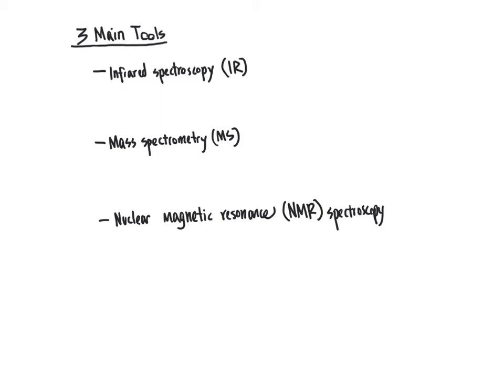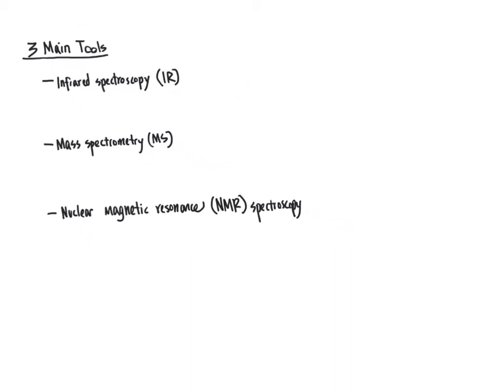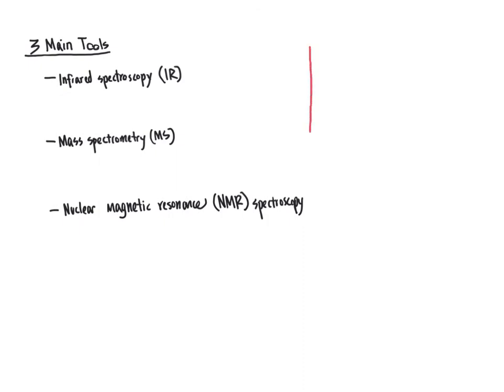In this video we will walk through each of these to give an overview of what is measured by each and the key info, to illustrate how these three different tools will provide complementary information about the structure of a molecule — enabling you to determine the complete connectivity between atoms, all the functional groups that are present, and arrive at a complete chemical structure. We'll create a table here to highlight what each tool will measure, and what information we gain from that measurement to determine features of the chemical structure of the molecule.